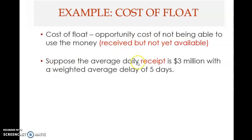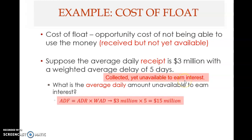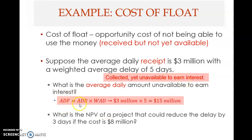Suppose the average daily receipt is three million with a weighted average delay of five days. This is money collected yet unavailable to earn interest — you receive it but it takes five days for the check to clear. The average daily float is ADR multiplied by the weighted average delay: three million times five days equals fifteen million.